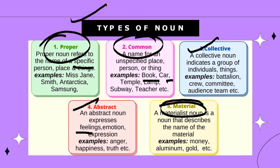The last one is material noun. A material noun is a word that describes the name of a material. For example, money, aluminium, gold, silver, etc. Unlike abstract noun, material noun can be seen, touched and known to us. Your parents must be having some jewellery of gold, silver, platinum or diamond — all these things are materials and fall under material noun.